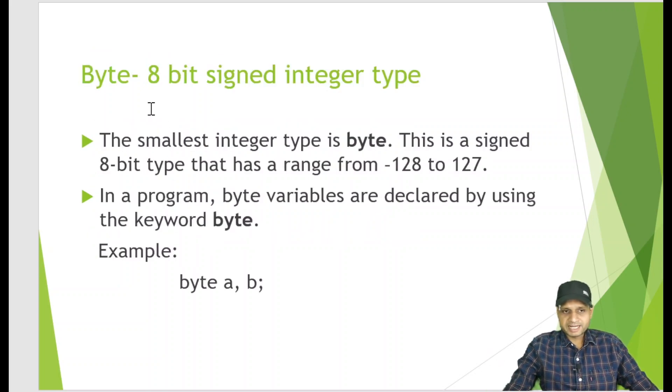Byte is 8 bit signed integer type. This is the smallest integer type in Java. It's a signed 8 bit integer type that ranges from minus 128 to 127. If in a program we want to define a variable as a byte, we use byte a and b.